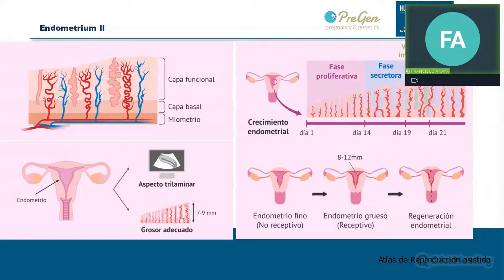The key player of the proliferative phase is estrogen, which induces proliferation of cells, stimulates expression of steroid receptors, and acts as a cell survival factor by inhibiting apoptotic genes. In the secretory phase — from the 14th to 28th day of the natural cycle — progesterone, which suppresses proliferation and induces cell differentiation, is the major player. During this second half, the endometrium is infiltrated by immune cells and prepared for implantation of the blastocyst.